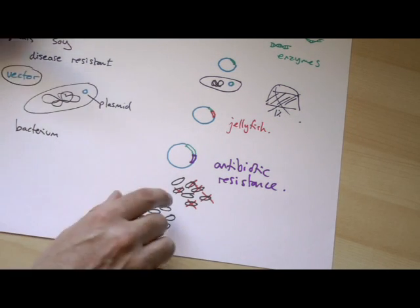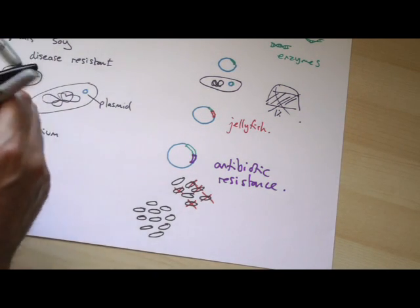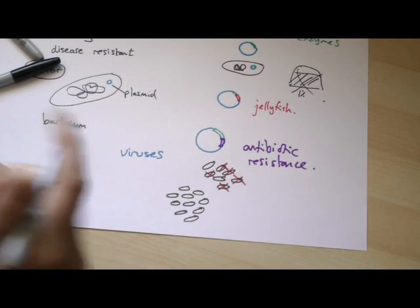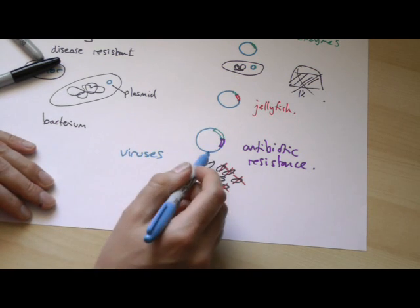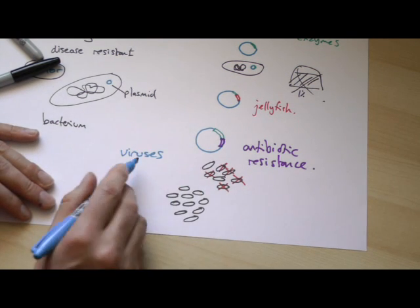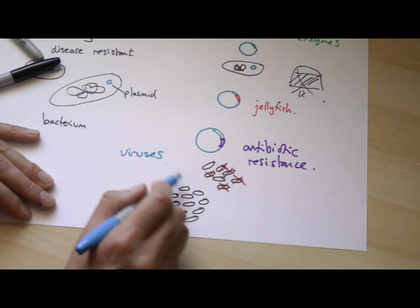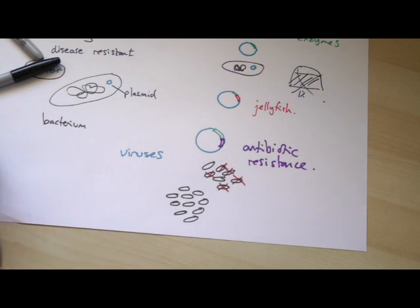There is another potential vector you can use which is viruses. Some viruses can also be used to carry genes into bacteria. There's actually some viruses that attack bacteria, weirdly enough, called bacteriophages and they can be used to insert genes in as well rather than going through this whole sort of plasmid process and cutting things up.